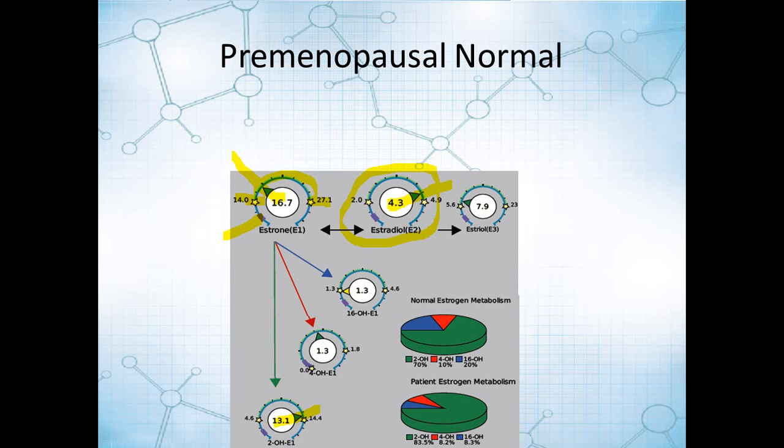Then we want to evaluate how that estrogen is being metabolized. We can see that in this particular case, what we're expecting is about 70% to go down that 2-hydroxy pathway, which makes metabolites that are generally considered more favorable in terms of their protective nature. In this example, the patient makes over 80%. There's an overproduction or an overmetabolism of the pathway you'd like to see preferred, and the expected levels of the other metabolites, which have less favorable characteristics, are generally at 10% and 20%, and in this case, they're less than 10% for both of those.